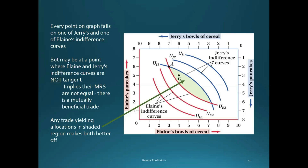Remember that the slope of the indifference curve is the marginal rate of substitution — the rate at which a consumer is willing to trade off one good for the other. So you have exchange efficiency when the indifference curves have the same slope and are just tangent at that point, which means the marginal rate of substitution for Elaine is exactly the same as the marginal rate of substitution for Jerry.